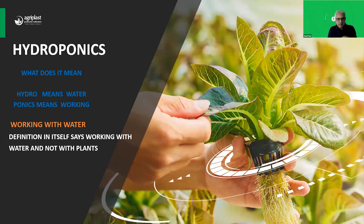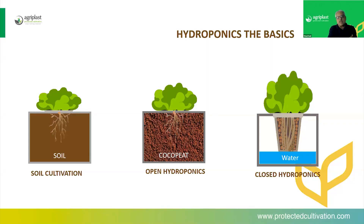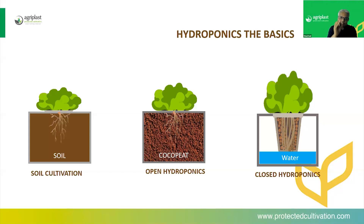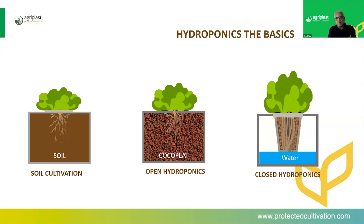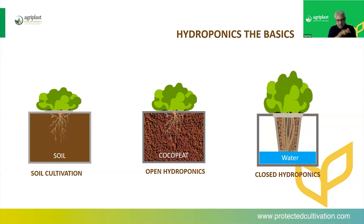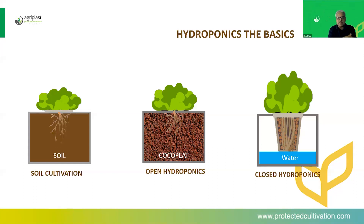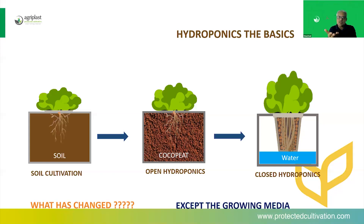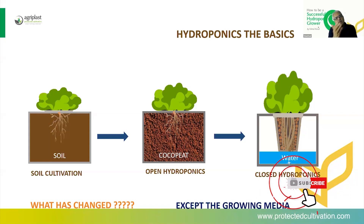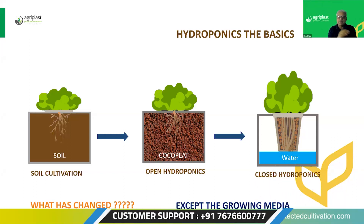Let's keep things very simple — this is how I have learned and arrived at these conclusions. Let's have three plants, very similar in each and every respect: one being grown in soil, another one being grown in cocopeat or open hydroponics, and the third one being grown in closed hydroponics or in water. These are three different but exactly same plants. The only difference is that one is being grown in soil, another in cocopeat, and the third in water. What has changed except the growing media? Nothing. It's only the growing media that has changed.